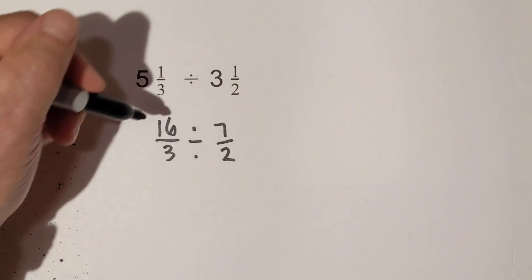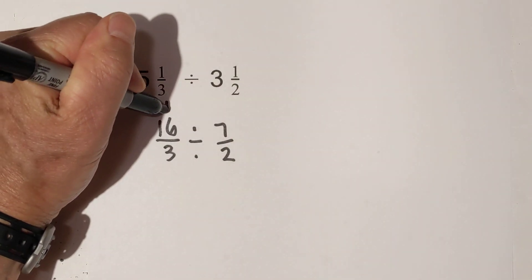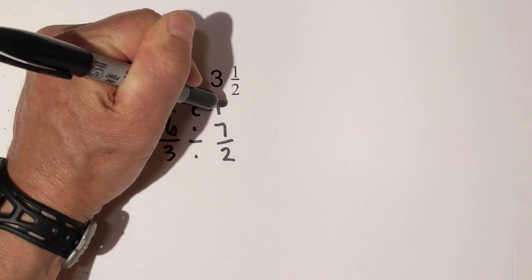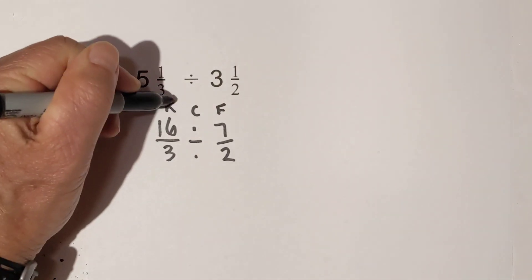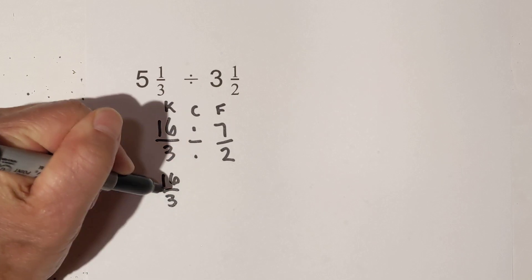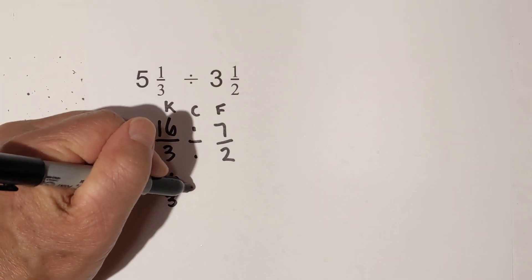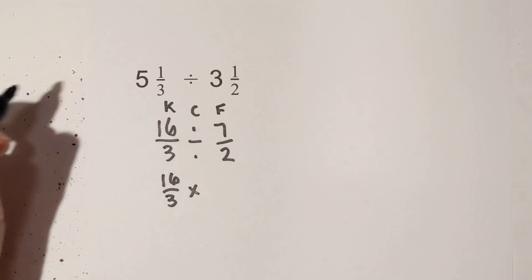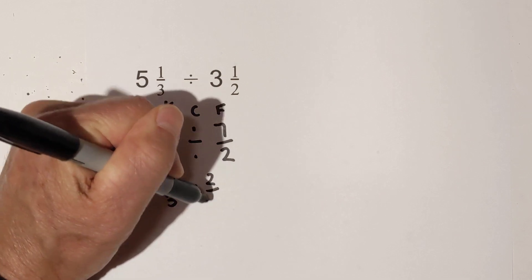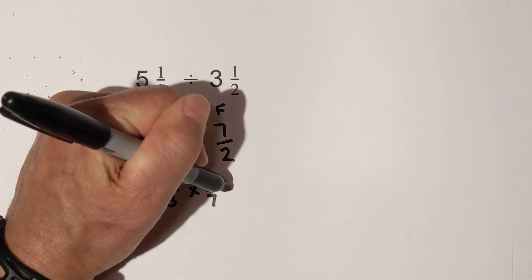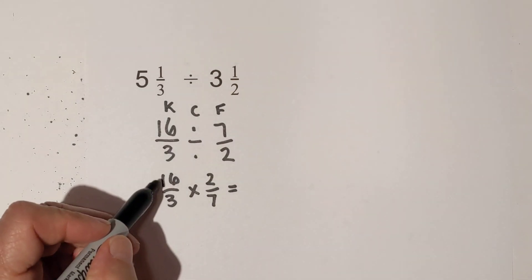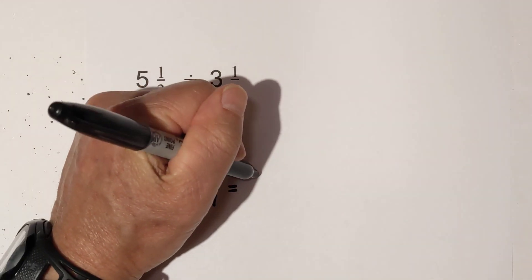Now you use keep-change-flip: keep sixteen thirds, change the division to multiplication, and flip the second fraction. Then you're back to multiplication — sixteen times two is thirty-two.